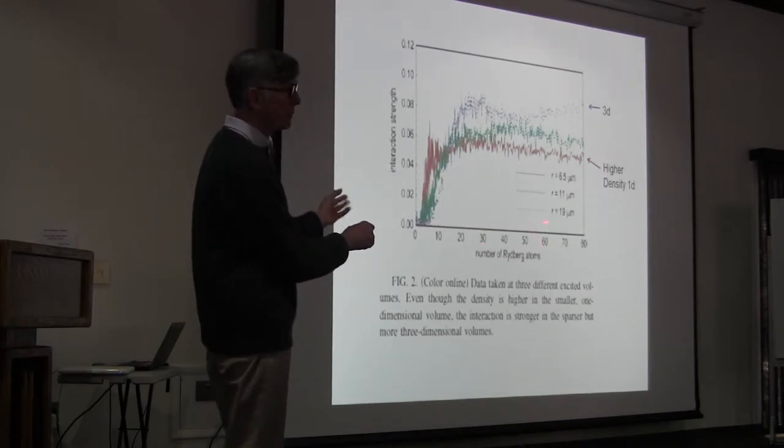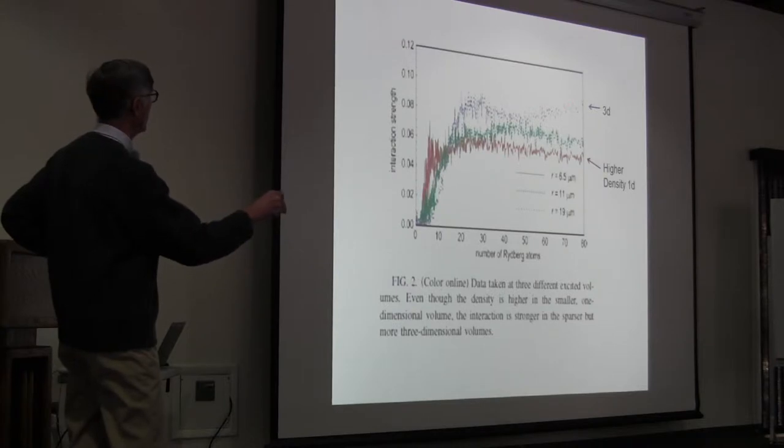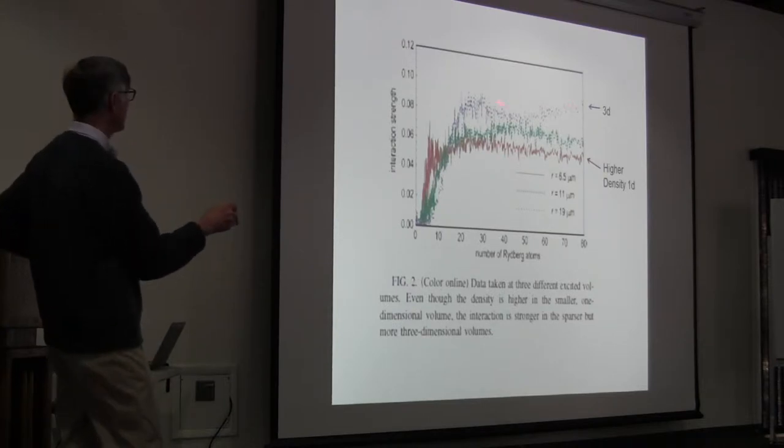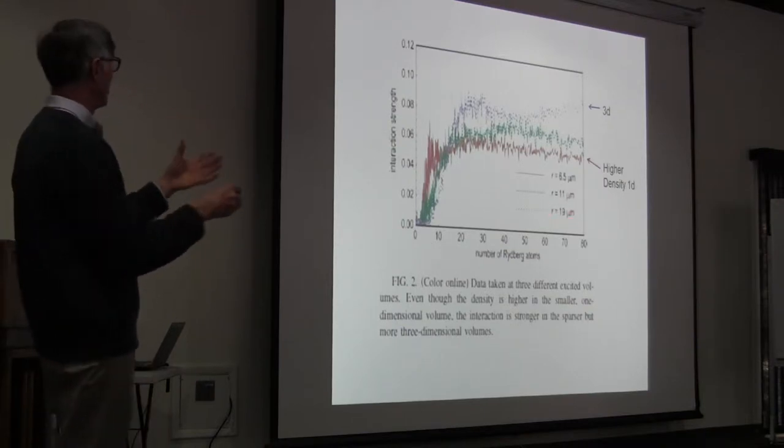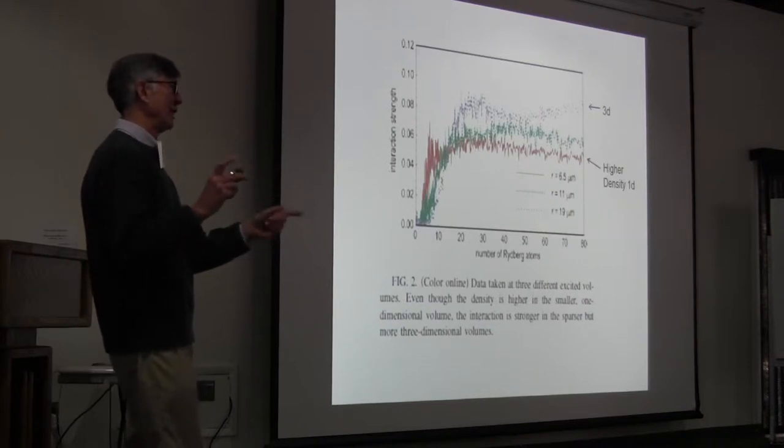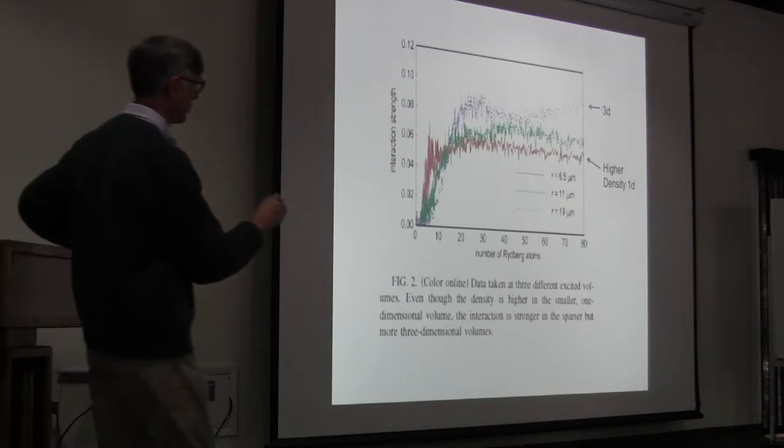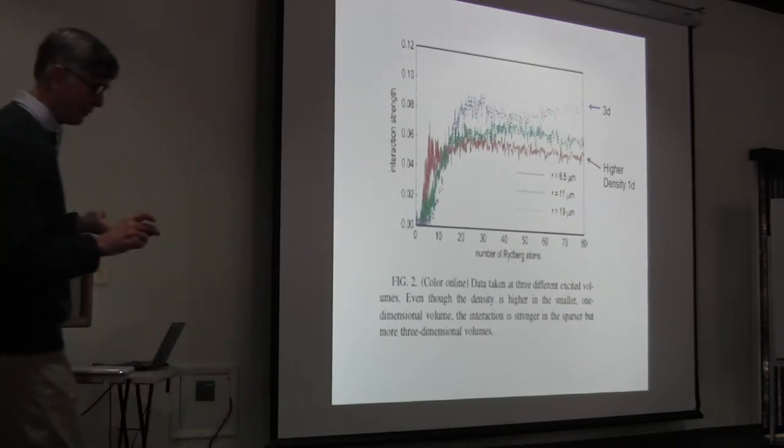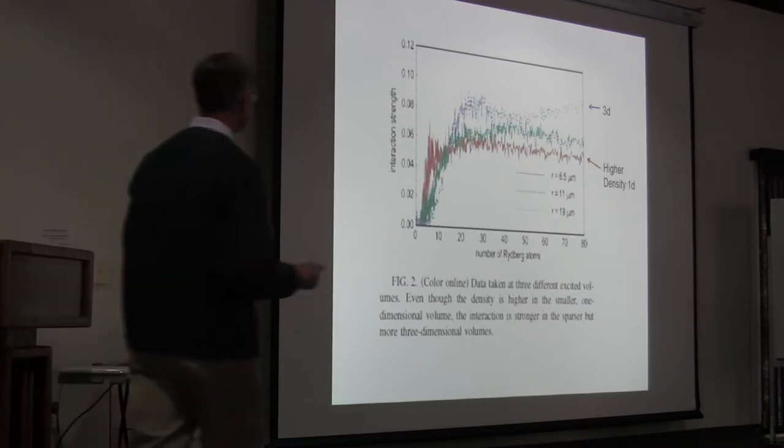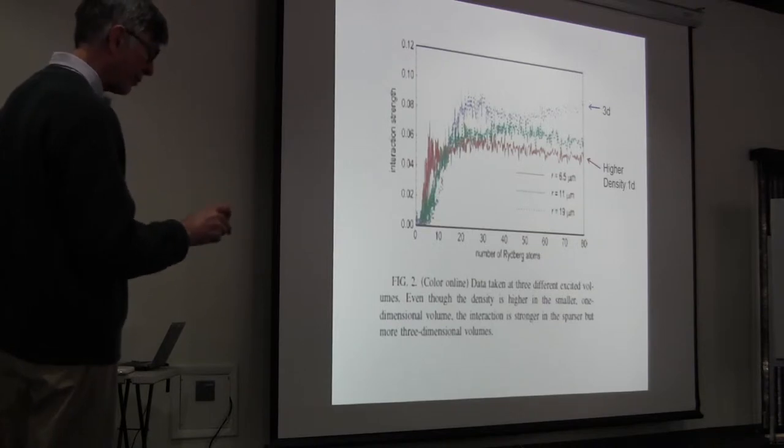The red curve is what they observed with the skinny cylinder. In all cases, notice, it's the same number of Rydberg atoms. This is a five-micron diameter cylinder, sorry, radius cylinder. And this is a 20-micron radius cylinder. They actually see more interaction strength in the 19-micron radius sample. It's four times as big in radius in diameter. That means it has one-sixteenth of the density. In spite of the fact that this has a much lower density, they clearly see more interaction. It seems to me that this is telling you that binary interactions are not the only problem.